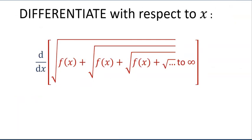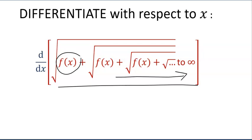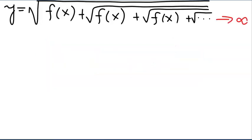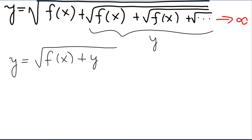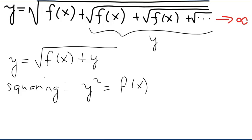In general, let's say we want to differentiate a function that looks like this: f(x) is a differentiable function of x with an infinite self-repeating form. How do we obtain the derivative with respect to x? We follow the same procedure. Since these terms self-repeat indefinitely, we can call that y as well. So we can write the above as f(x) plus y. Squaring, we get y squared equals f(x) plus y.